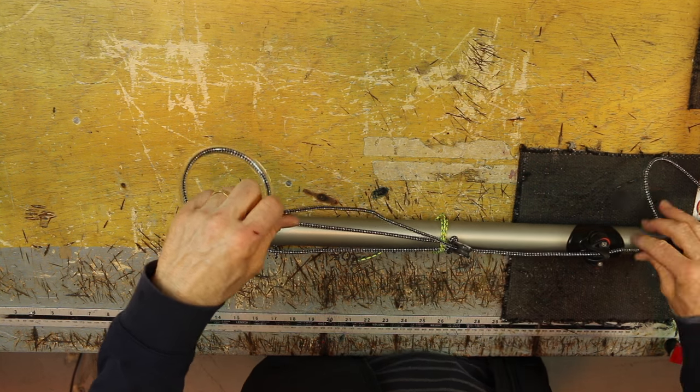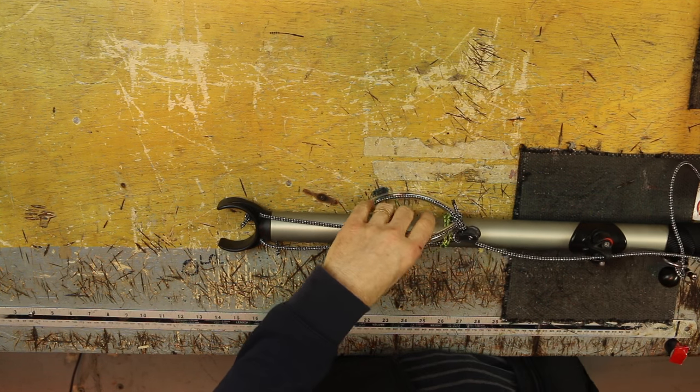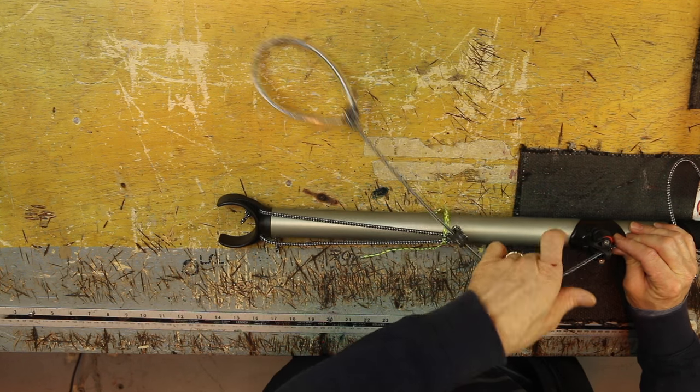So as you pull on your control line it cleats. You pull from behind, the control line then cleats on and off.